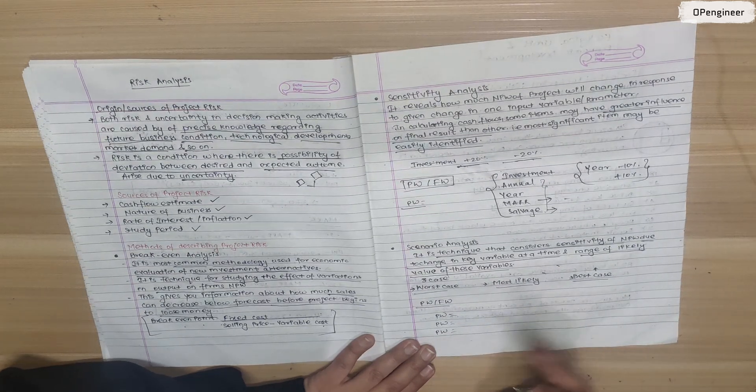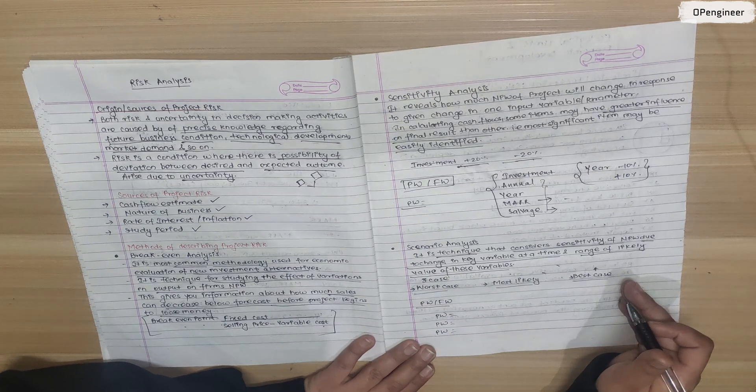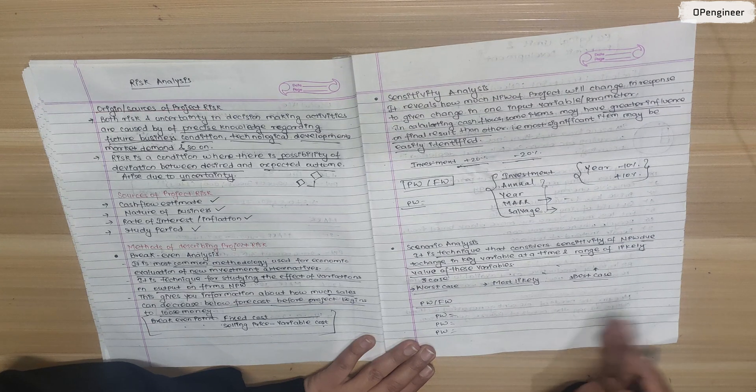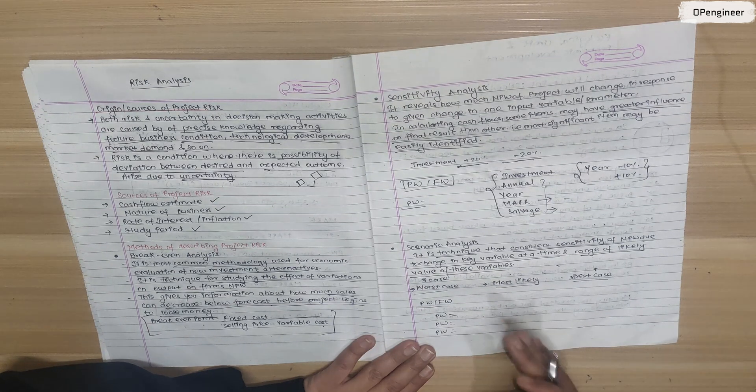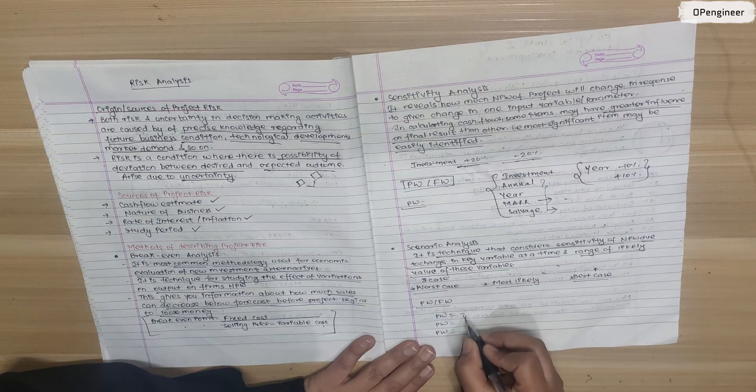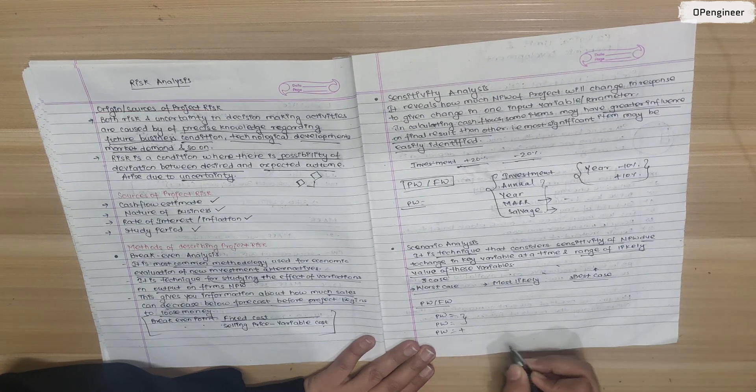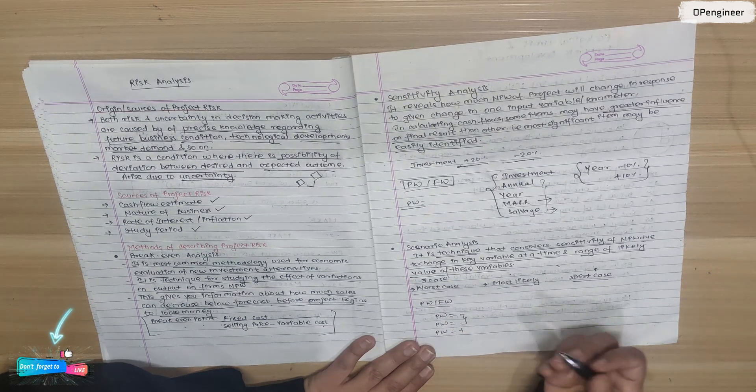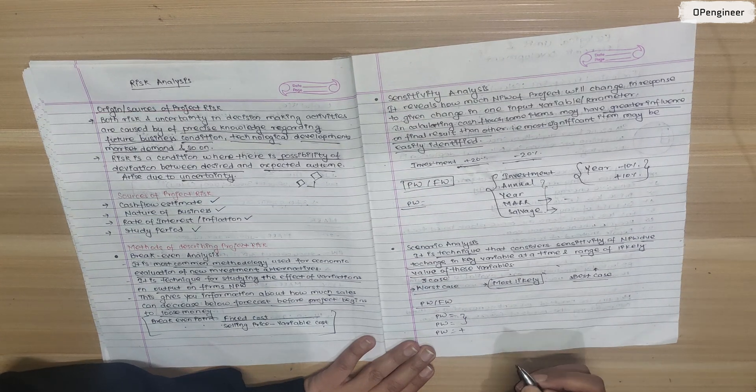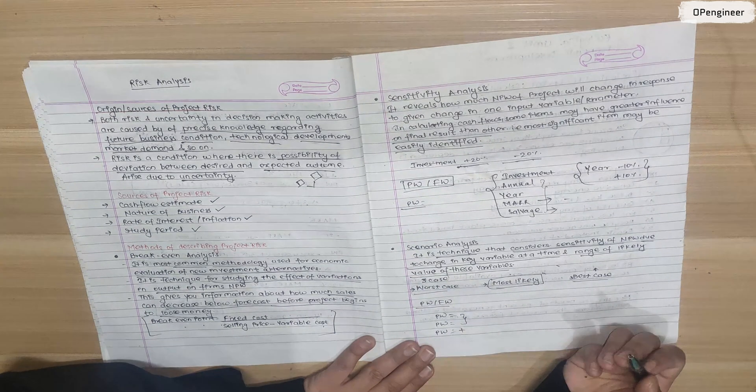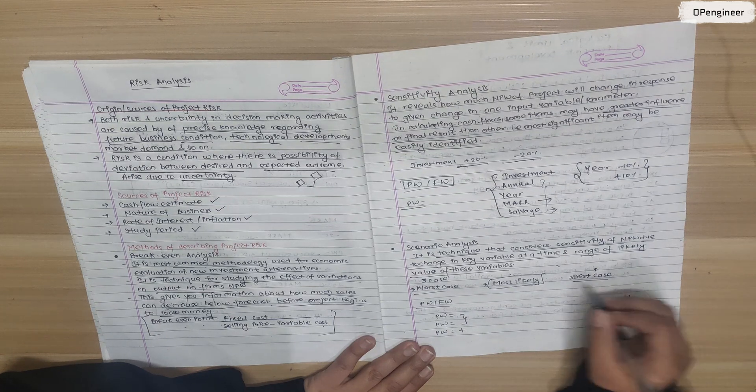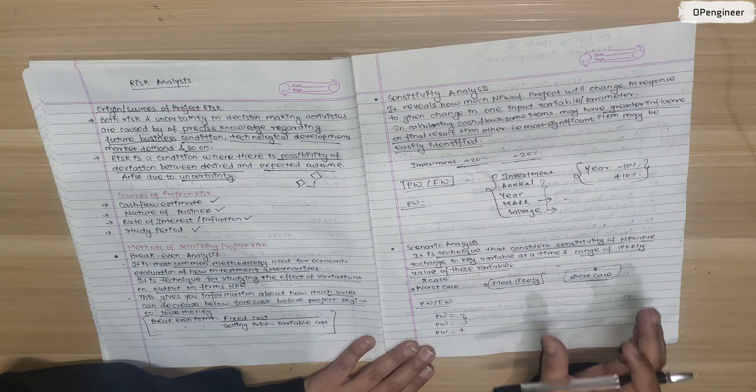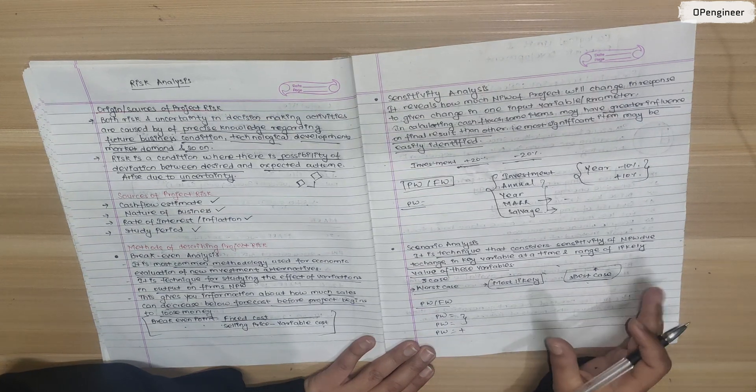After calculating all three, we see what values we get. If all three show positive profit, we should invest in this project and we can see future calculations. If most show negative and only the best case shows positive, then only the best case is favorable. If worst case is negative but most likely case is positive, that's also a scenario. If only one is positive, there is risk in investing. This is what we understand from scenario analysis.